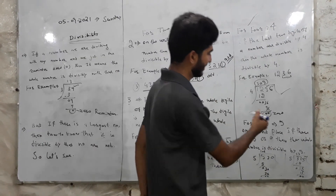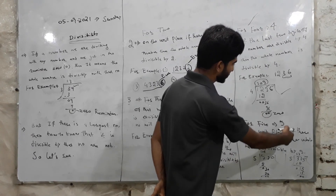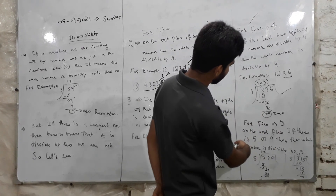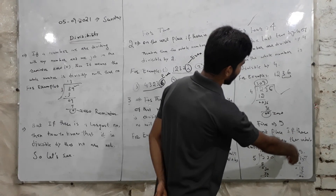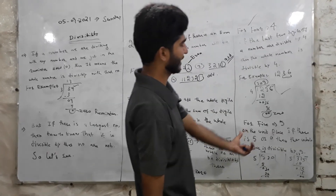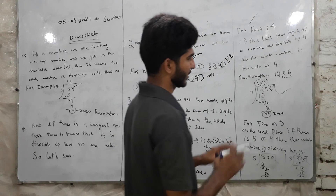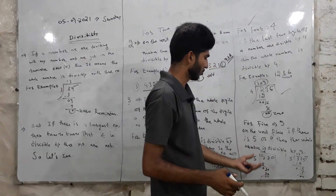For divisibility by 5, if the unit place has a 5 or 0, then the whole number is divisible by 5.